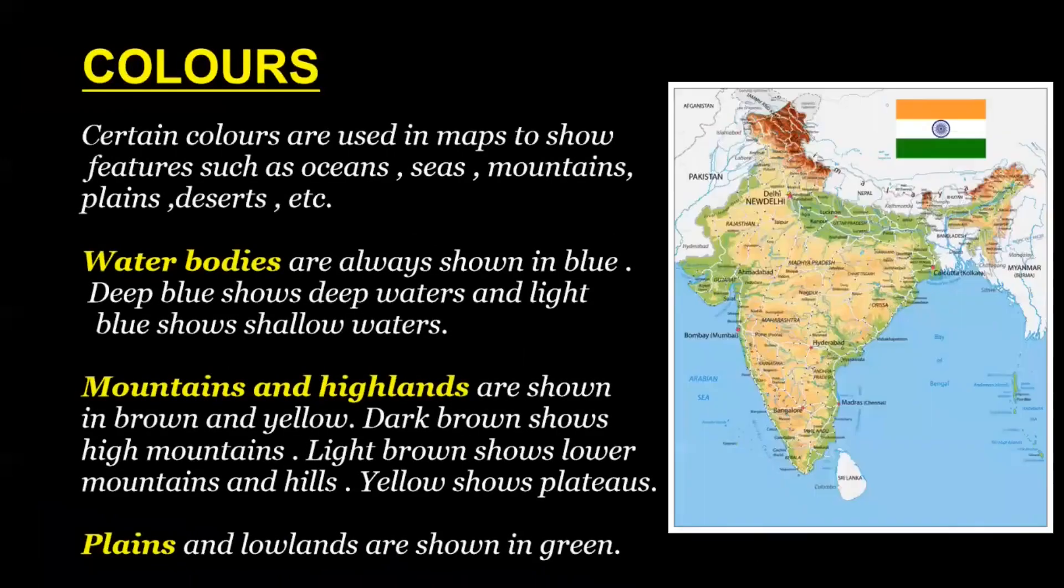Colors. Certain colors are used in maps to show features such as oceans, seas, mountains, plains, deserts, etc. Water bodies are always shown in blue. Deep blue shows deep waters and light blue shows shallow waters. Mountains and highlands are shown in brown and yellow. Dark brown shows high mountains. Light brown shows lower mountains and hills. Yellow shows plateaus. Plains and lowlands are shown in green.